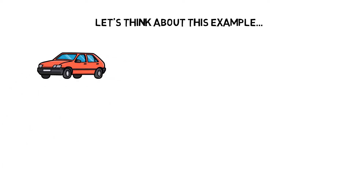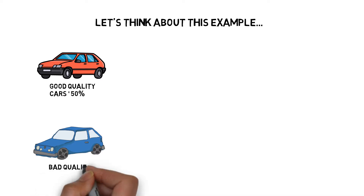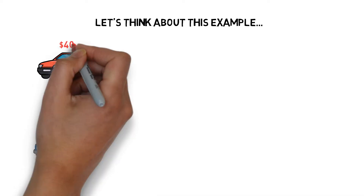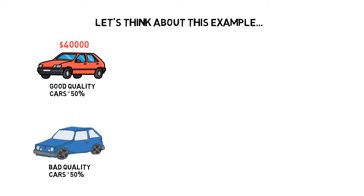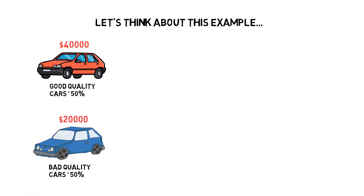To illustrate this theory clearly, let's think about this example. Let's assume that on the first day there are both good and bad quality cars in the market. For every 100 second-hand cars, there are 50 good quality cars and 50 poor quality cars. The real value of a good quality car is $40,000 and the real value of a poor quality one is $20,000.